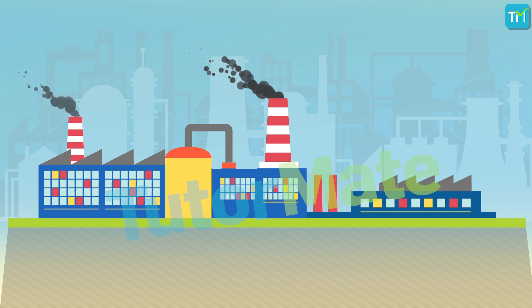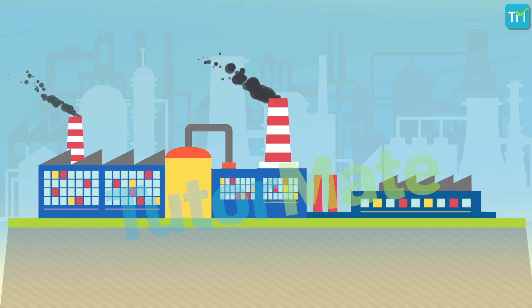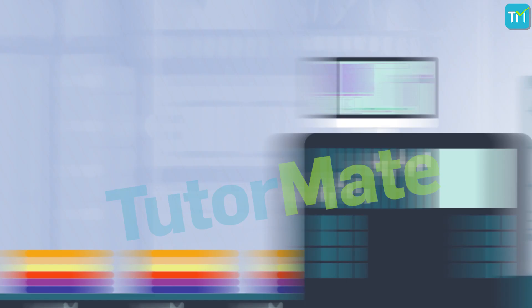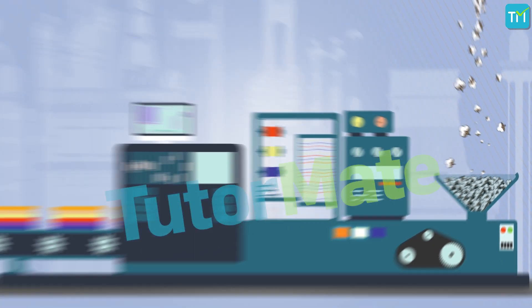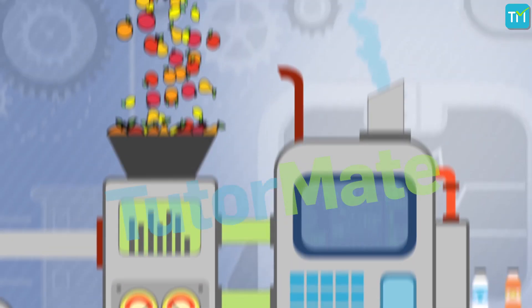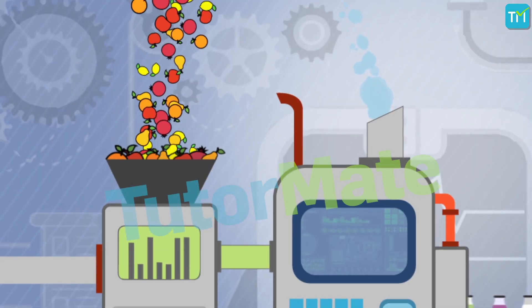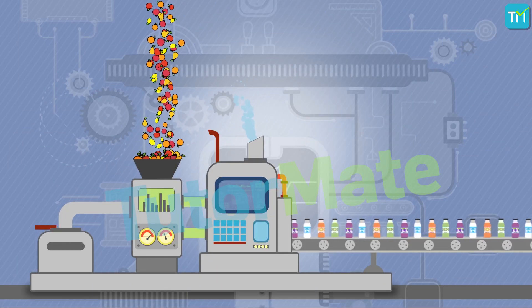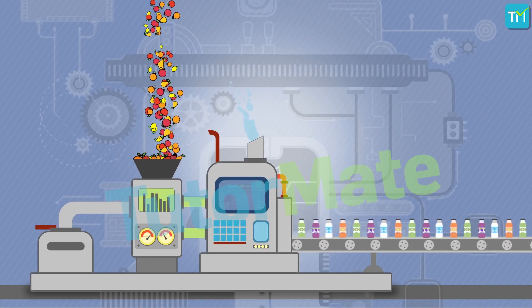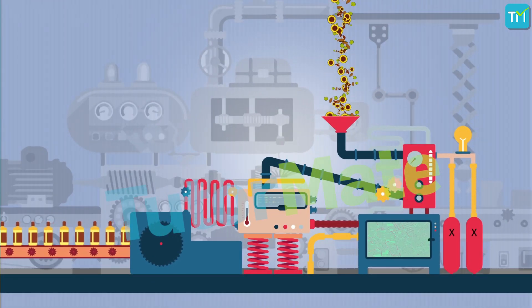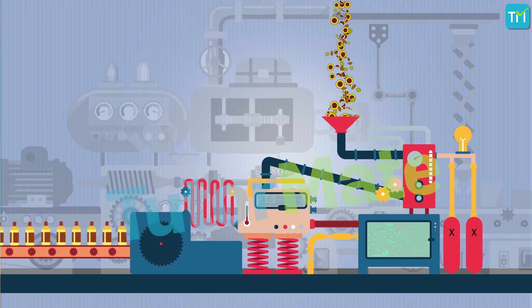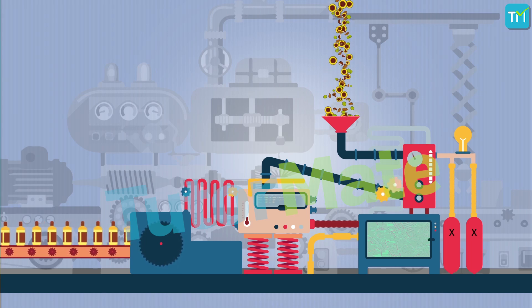Can you name some industries based on agricultural raw materials? There's textile that comes from growing cotton and farming silkworms. There's the juice industry which gets its main ingredients from fruits. And then there's the hair care industry too, which uses all kinds of natural oils or herbs, plants and flowers.